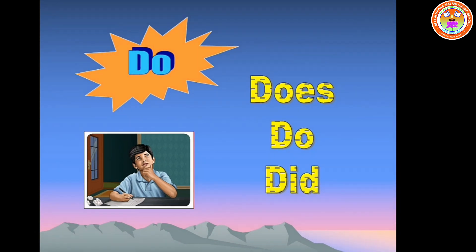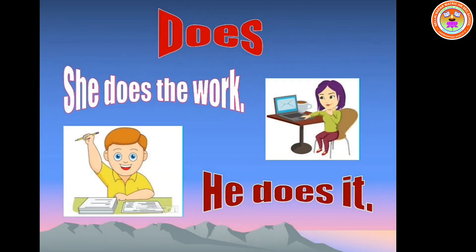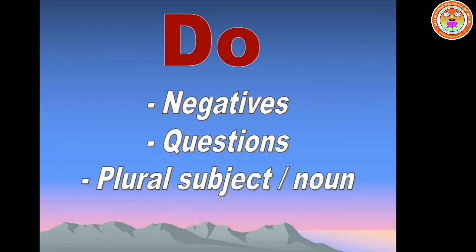Do verb: does, do and did are the forms of do verb. Does is used with singular subject or singular pronoun to indicate present. Example: she does the work. He does it. She and he are singular pronouns. Do is the supporting auxiliary. It is used in forming negatives and questions. It is used with plural subject or plural noun.